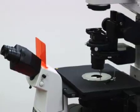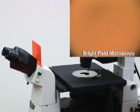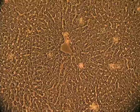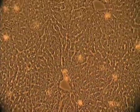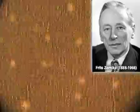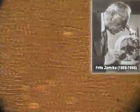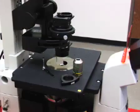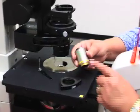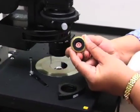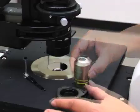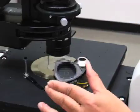Standard bright-field microscopy is not adequate for viewing transparent and colorless specimens. Phase contrast microscopy is often used to produce contrast for transparent, non-light-absorbing, biological specimens. The technique was discovered by Czernick in 1942, who received the Nobel Prize for his achievement. The phase contrast microscope is a bright-field light microscope with the addition of special phase contrast objectives, which contain a phase plate or ring, and a condenser annulus instead of a diaphragm.